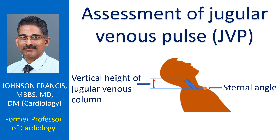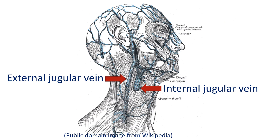This is a discussion on jugular venous pulse as part of cardiology for medical students. Assessment of jugular venous pulse has to be done in the internal jugular vein, though a beginner is often tempted to use the external jugular vein. External jugular vein may be kinked and it may not reflect the true right atrial pressure.